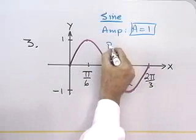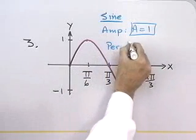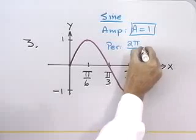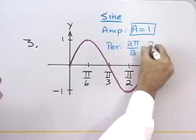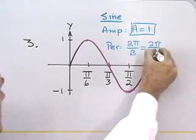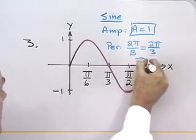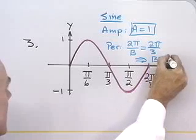So the period is going to be 2 pi, always divided by that b coefficient. In this case, for this graph, it's 2 pi over 3. That tells me that b is equal to 3.